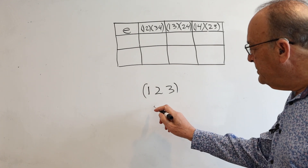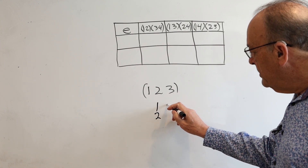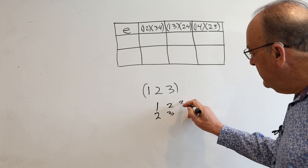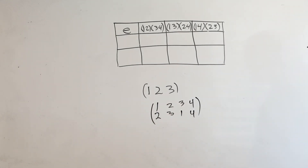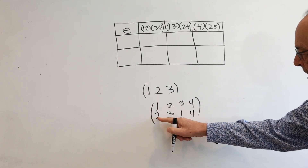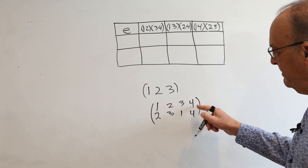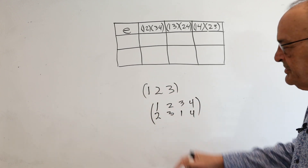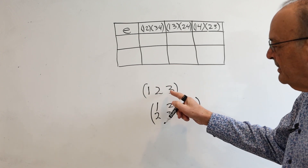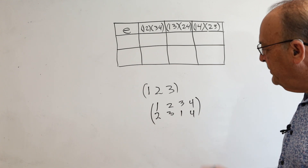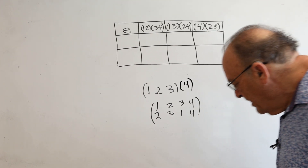Another way to write this function — and we'll see why it's called a function — is that one goes to two, two goes to three, three goes to one, and four goes to itself. This is two-line notation. It shows more clearly why it's a function: we've got input, output, input, output, input, output, input, output. So functions have inputs and outputs. This is the same permutation as the cyclic notation, just two different notations. So one goes to two, two goes to three, three goes to one, and four goes to itself — though it's often left out.